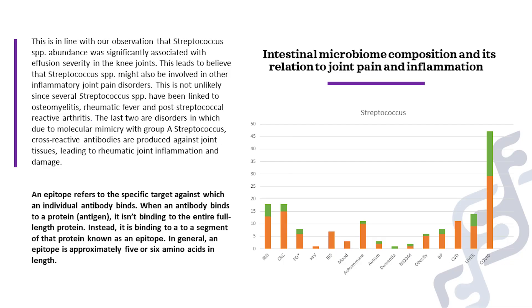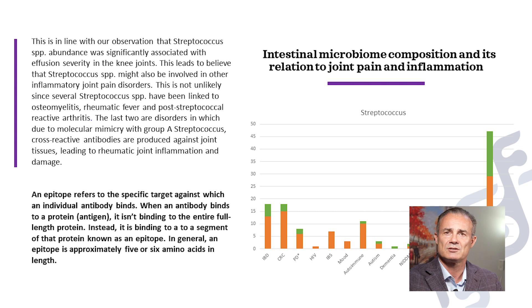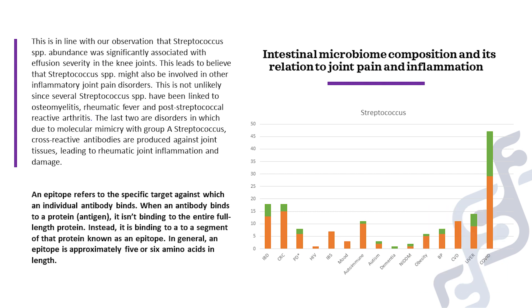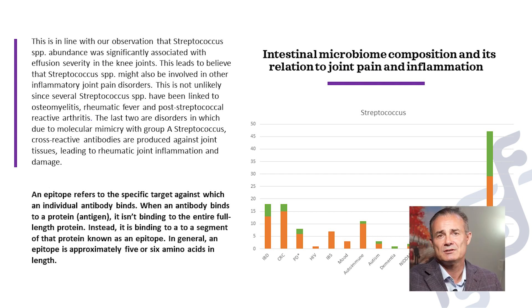Therefore, it would seem obvious to aim for a healthy microbiome and one that is less inflammatory. When addressing the microbiome, first to come to mind are conditions like IBS, SIBO, Crohn's disease, and ulcerative colitis — these are conditions of the GI tract and are obvious. What's less obvious are others like autoimmune conditions, cardiovascular disease, depression, anxiety, and many more. The average person doesn't think of these as being linked to gut health, but they are.